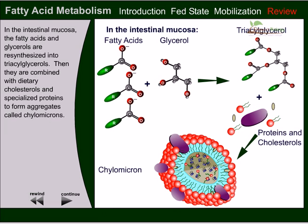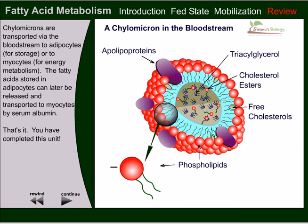There are different types of protein-lipid droplets according to their molecular weight and size — low-density lipoprotein (LDL), high-density lipoprotein (HDL), very low-density lipoprotein (VLDL), and very high-density lipoprotein (VHDL). Chylomicrons are transported via the bloodstream to adipocytes or to myocytes for energy metabolism. Fatty acids stored in adipose can later be transported to myocytes by serum albumin. That covers how dietary fat metabolism is processed: dietary fat broken down to fatty acids, then finally presented either to adipose tissues for storage or to muscle cells for energy production.